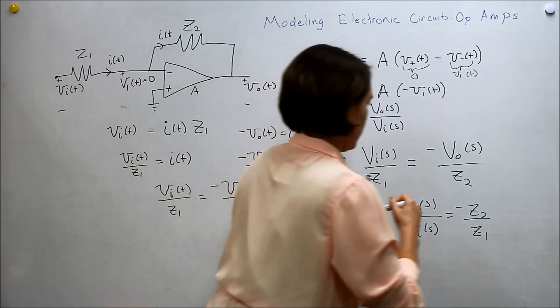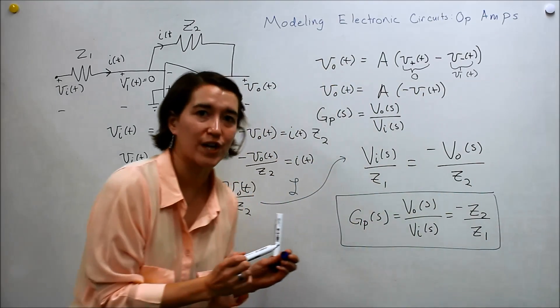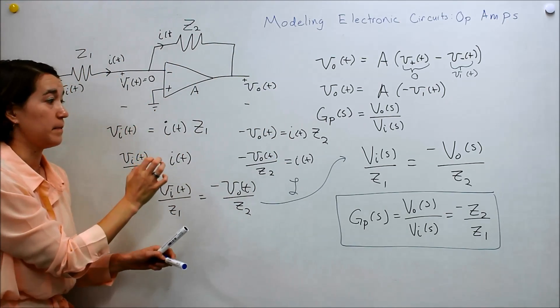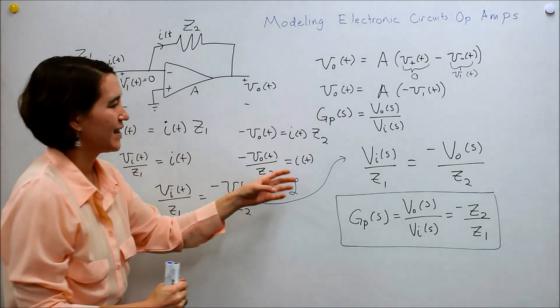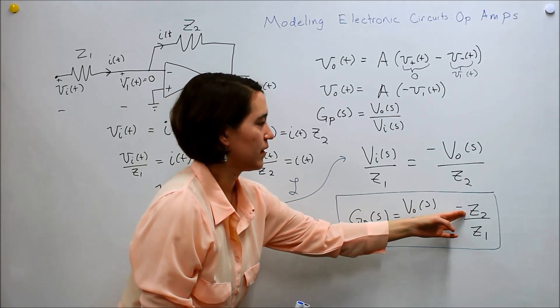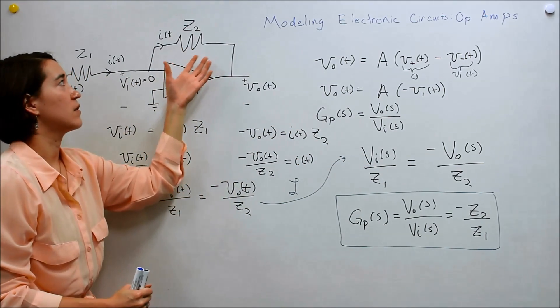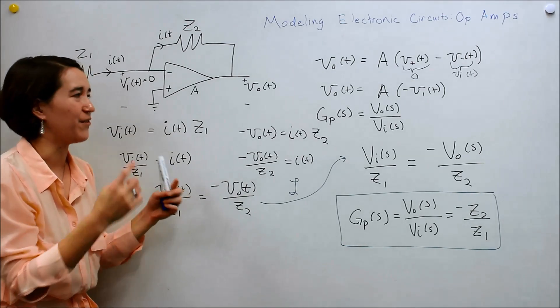So this would be our transfer function for this op-amp system. And the cool thing about this is that, so Z2 and Z1 here are, they can actually be general expressions for anything on this branch. So if we have a combination of capacitors,